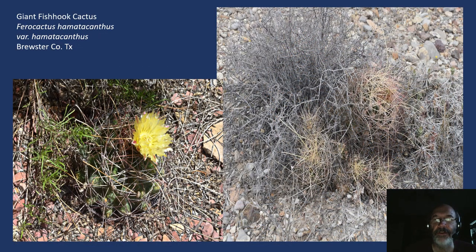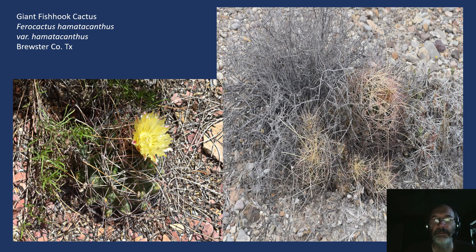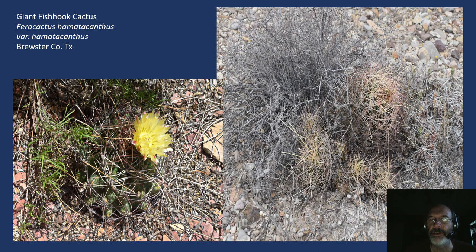And then the Ferocactus. We have two ferocacti here. We have the giant fish hook, Ferocactus haematacanthus — two views here, one in bloom, both photographed in Big Bend National Park. Just to the right of the cactus in the right photograph, you can see one of the cylindropuntias, the dog chollas. I have no idea which variety that is — we have four or five different species and I have not bothered to key them out, so I can say there's a dog cholla and that's about as far as I can get right now.